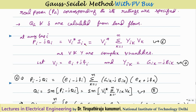At any bus, Pi − jQi = Vi*·Ii = Vi*·Σ(k=1 to N) Yik·Vk. From this, QI can be calculated: since the left side has real and imaginary parts, QI is the negative of the imaginary part of Vi*·Σ(k=1 to N) Yik·Vk. That is, QI = −Im[Vi*·Σ(k=1 to N) Yik·Vk].